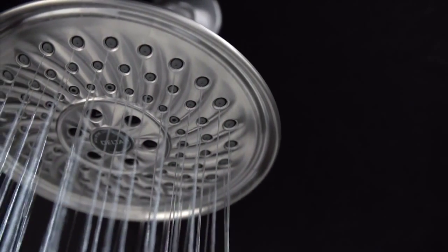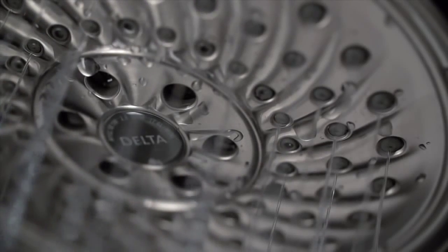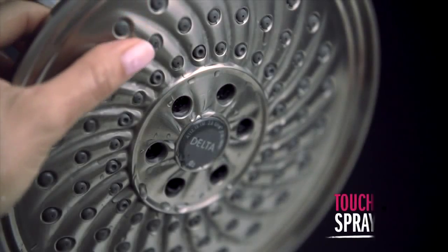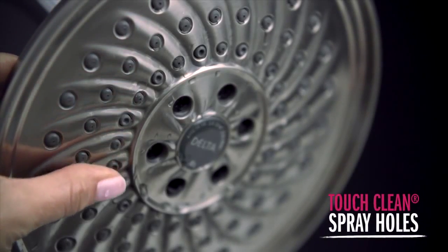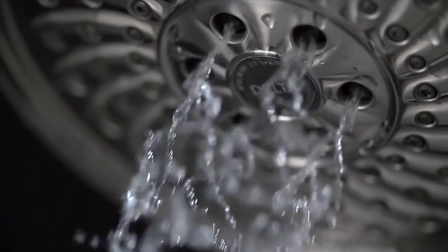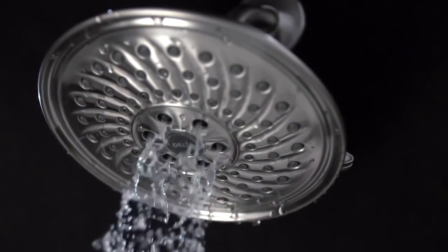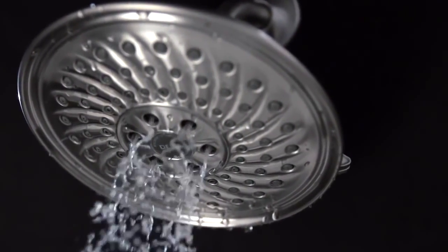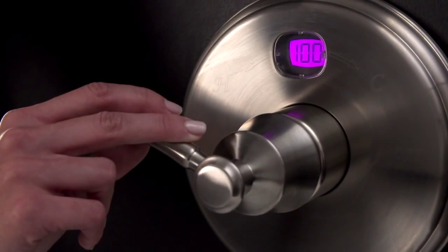Cleaning couldn't be easier with the Delta TouchClean Spray Holes. A simple touch of the finger easily removes any calcium or lime buildup, and the self-cleaning H2O Kinetic Spray Holes protect against calcium and lime buildup over time. The LED display is powered